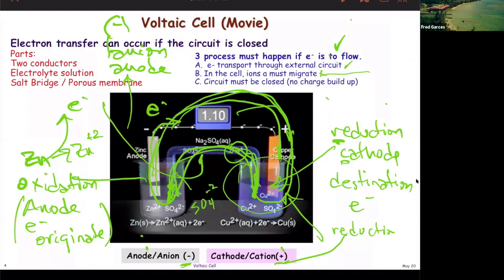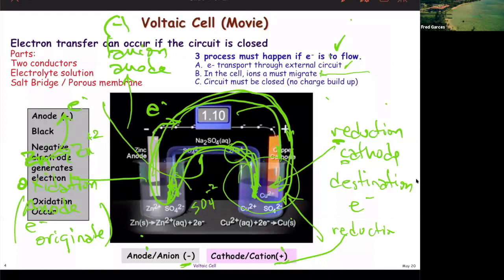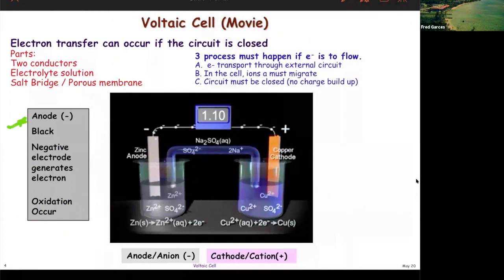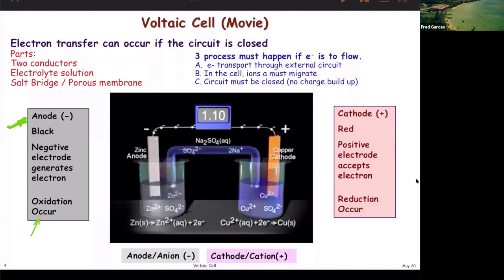The anode is the negative terminal — the black terminal. If you have a car battery, the negative portion is going to be your black post. It's the negative electrode; it generates electrons; oxidation occurs. On the other side you have your cathode — the positive terminal, the red post. That's where the electrons are headed and that's where reduction occurs. The side that loses electrons is negative because that's your electron source. The side that gains electrons is positive because that's where your electrons are headed.